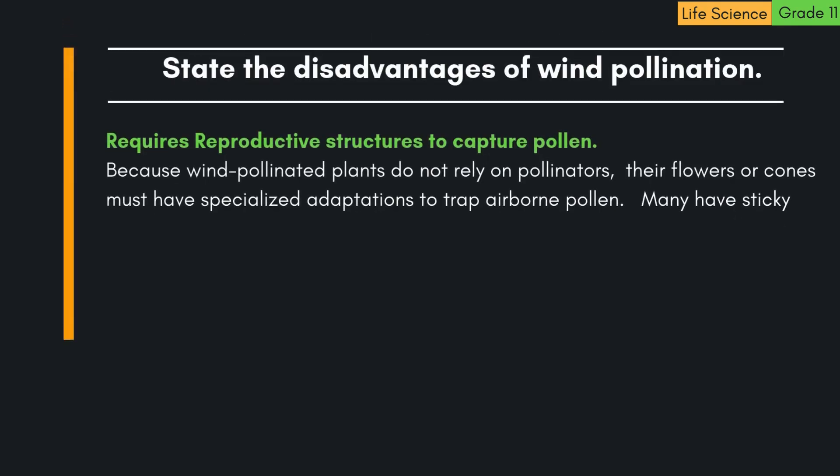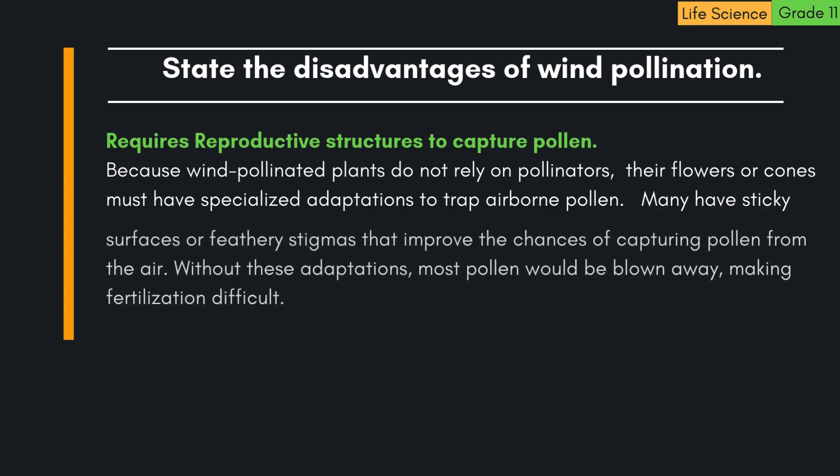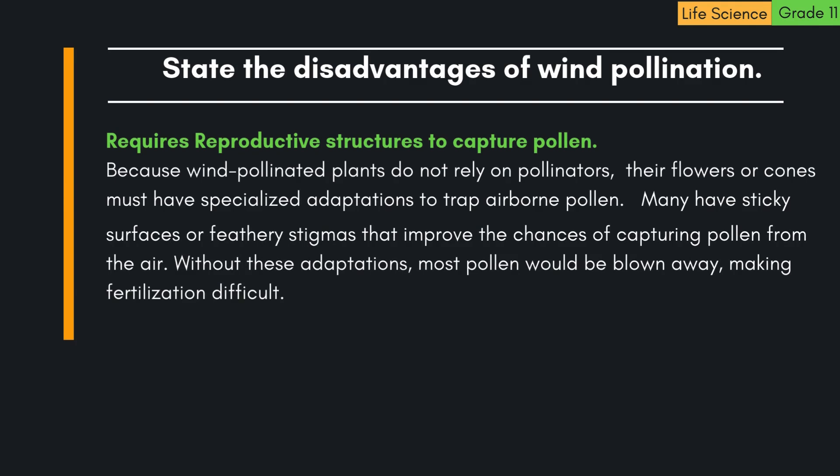4. Requires reproductive structures to capture pollen. Because wind-pollinated plants do not rely on pollinators, their flowers or cones must have specialized adaptations to trap airborne pollen. Many have sticky surfaces or feathery stigmas that improve the chances of capturing pollen from the air. Without these adaptations, most pollen would be blown away, making fertilization difficult.